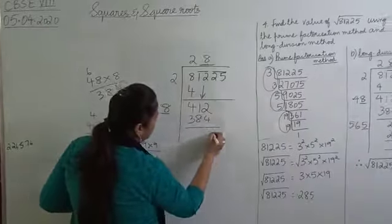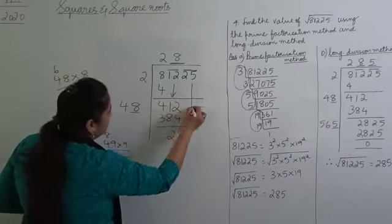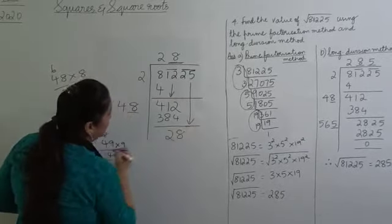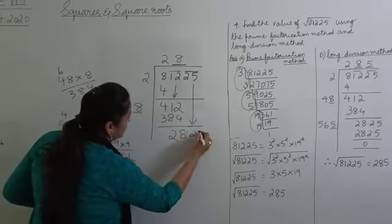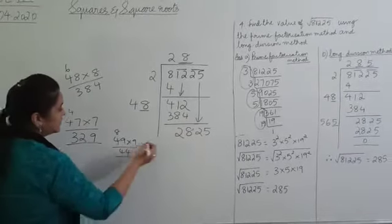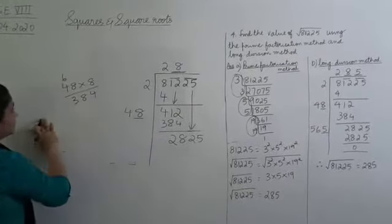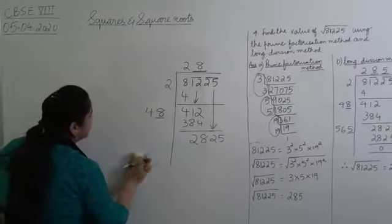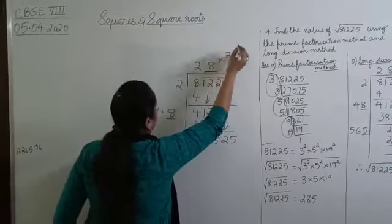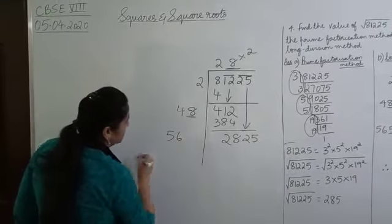Subtract: 412 minus 384 leaves 28. Now bring the next pair down — 25 comes down — giving us 2825. Double the quotient: 28 multiplied by 2 gives 56.